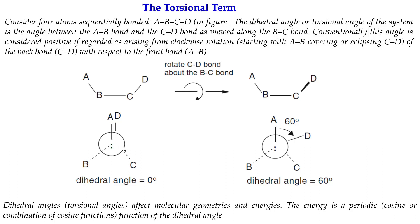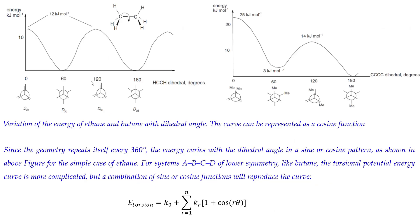This is shown in a Newman projection. If you place the B-C bond along the viewing axis, when A and D are in the same orientation the dihedral angle is zero. If D is rotated approximately 60 degrees, then the dihedral angle is 60 degrees. Dihedral angles affect molecular geometries and energies. This energy is a periodic function, as shown in two energy plots — one for ethane and another for butadiene.